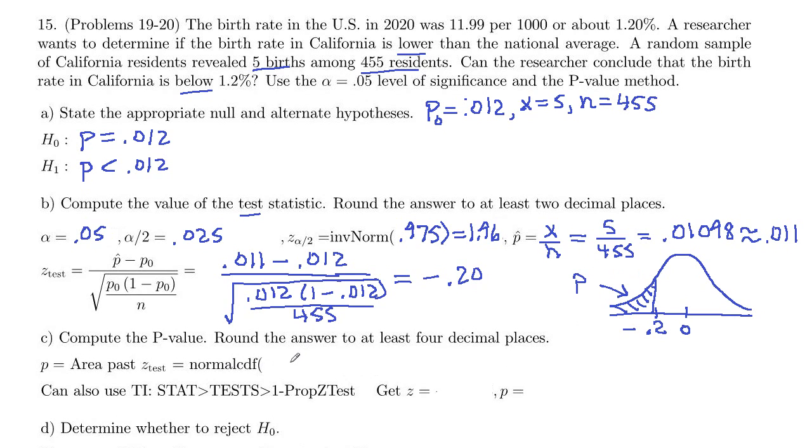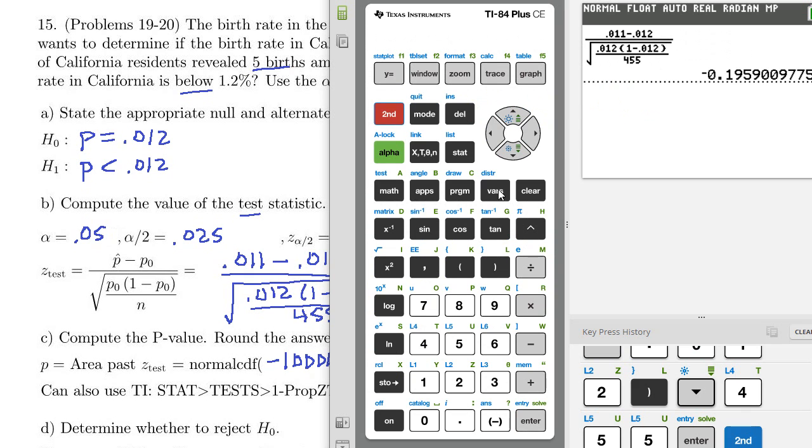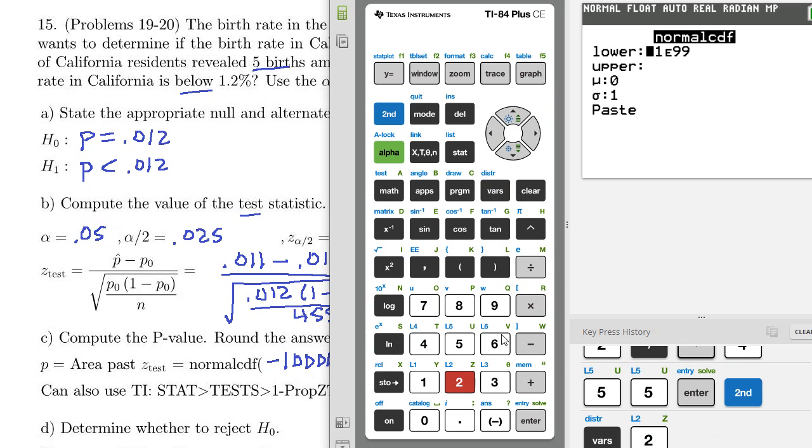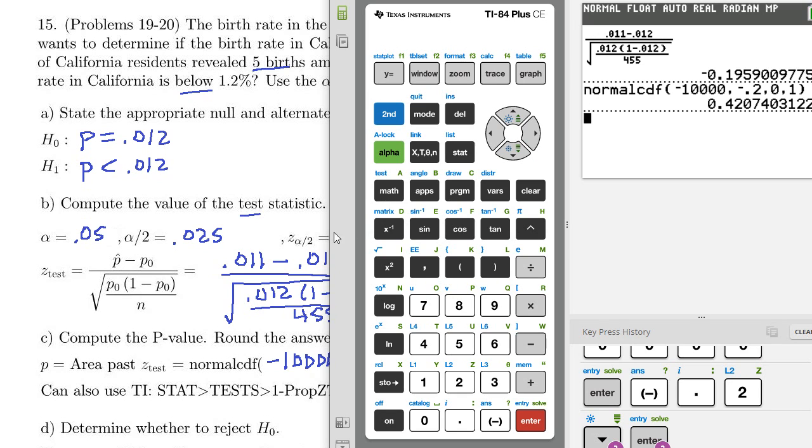So we can use normal CDF to get that. So the left-hand cutoff down here, negative infinity, we'll use negative 10,000. Right-hand cutoff, 0.2 negative. And then 0 and 1 are mean and standard deviation. So let's compute that. Second variables, normal CDF is number 2, negative 10,000 and then we've got negative 0.2. And everything else is the same, 0.4207.